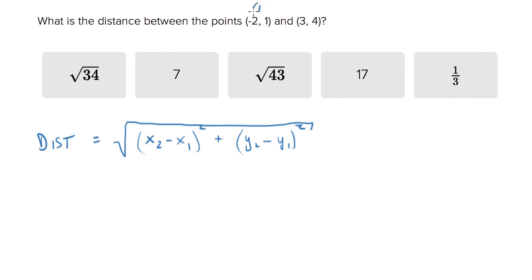I like to number these in advance, let's just call this 1 and 2. So x2 is 3, x1 is negative 2, right?